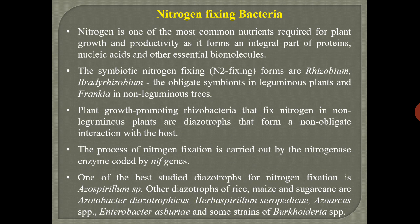Nitrogen fixation can happen in two ways: symbiotic nitrogen fixation and asymbiotic nitrogen fixation. The symbiotic nitrogen-fixing forms are Rhizobium and Bradyrhizobium, which are obligate symbionts with leguminous plants, and Frankia, an actinomycete with symbiotic association in non-leguminous trees. PGPR that fix nitrogen in non-leguminous plants are called diazotrophs — they form a non-obligate interaction with the host. The process of nitrogen fixation is carried out by the nitrogenase enzyme, coded by nif genes. One of the best studied diazotrophs is Azospirillum species.